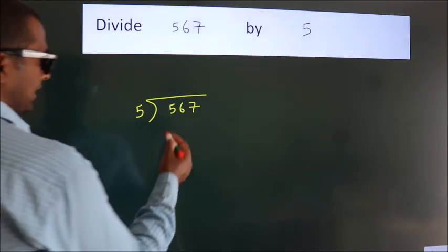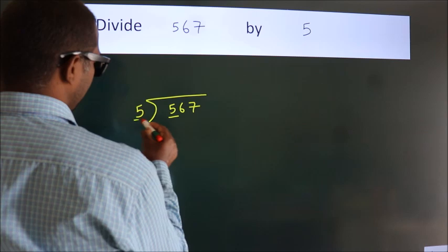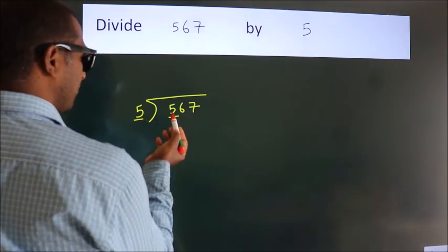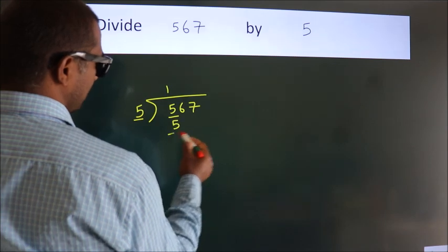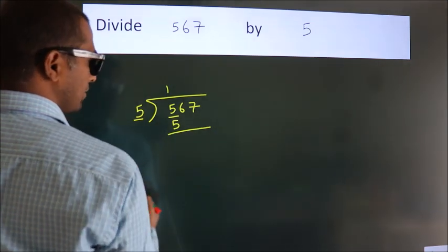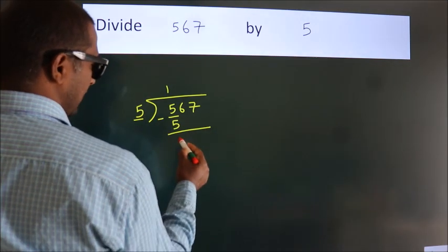Next. Here we have 5, here 5. When do we get 5? In 5 table. 5 once, 5. Now we should subtract. We get 0.